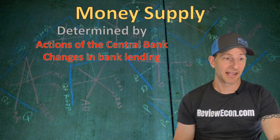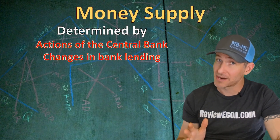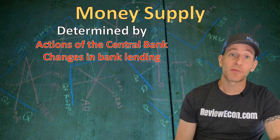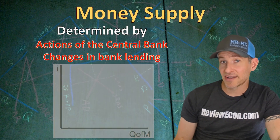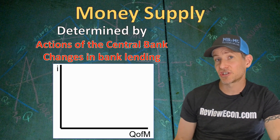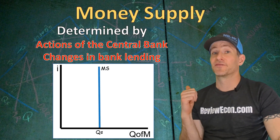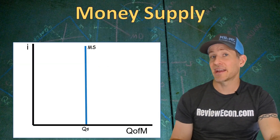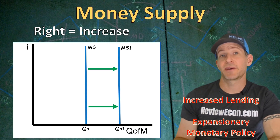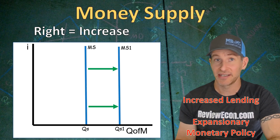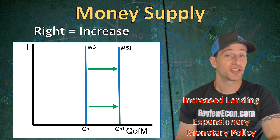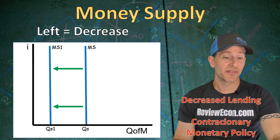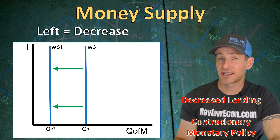Next we're going to talk about the money supply. The money supply is determined by actions of the central bank — primarily a central bank when there are scarce reserves — and changes in banking lending within the banking system. Since the supply of money is primarily controlled by the central bank, there will be no relationship between the quantity of money supplied and the interest rate, giving us a vertical supply of money curve. Just like other supply curves, a rightward shift is an increase — from more lending in the banking system or expansionary monetary policy. A leftward shift is a decrease — from a decrease in lending or contractionary monetary policy.